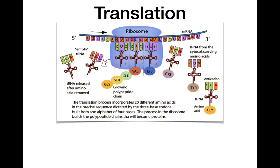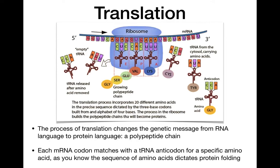So first things first — here's a nice diagram of translation. Translation is the process of changing the genetic message stored in our DNA, carried to us through the mRNA outside the nucleus, into a new language: the protein language of the polypeptide chain. Transcription is copying the DNA message into an mRNA message, and then translation changes language completely — from DNA language to protein language. The sequence of amino acids dictates the protein shape and folding, which we discussed in topic 2.4.